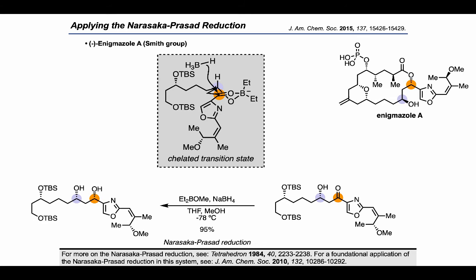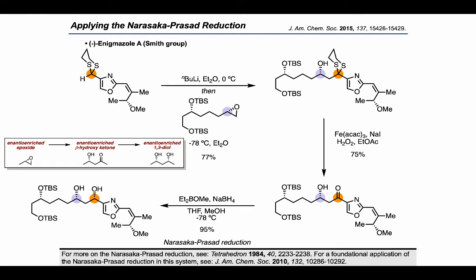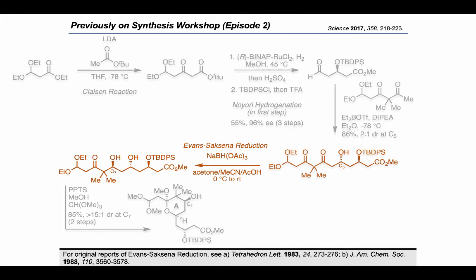The Narasaka-Prasad reduction, as a side note, is proceeding through a chelated transition state where the boron is bound to both oxygens of the beta-hydroxyketone. Zooming out and looking at the synthetic sequence used by the Smith Group during their enigmozole synthesis, we can see the general pattern of converting an enantio-enriched epoxide to an enantio-enriched beta-hydroxyketone using dithiane chemistry, and then using these reactions to elaborate that into an enantio-enriched 1,3-diol. Another important approach to 1,3-diol construction mentioned before is the Evans-Tishchenko reduction, which we saw in the context of the Wender Group's Bryostatin 1 synthesis in episode 2. That reaction gives an anti-1,3-diol motif like the Evans-Tyshenko reaction, but unlike the Narasaka-Prasad reduction.